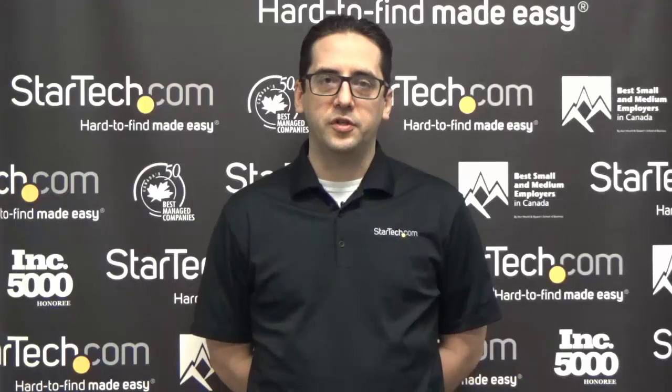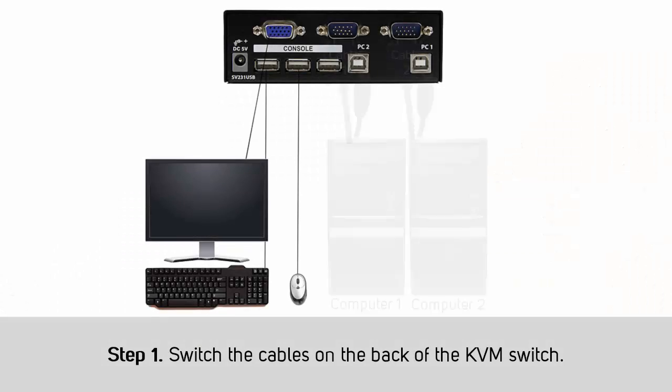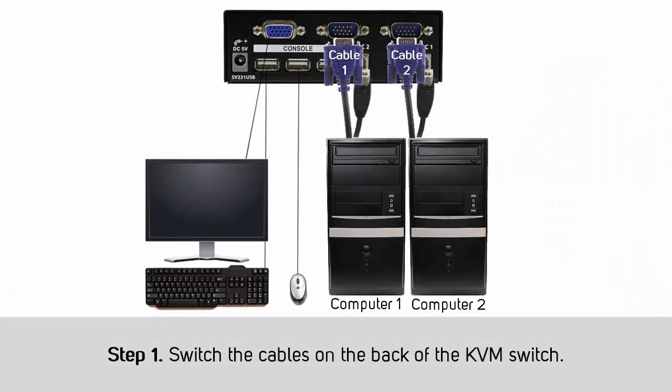In order to confirm which specific part of a KVM solution is causing you an issue, you need to eliminate what is working properly. If one USB device, port, or computer is not working properly, complete the following. Step 1: Switch the cables on the back of the KVM switch, but do not switch which computer is plugged into which port. If the issue moved with the cables, something is likely wrong with the cables.